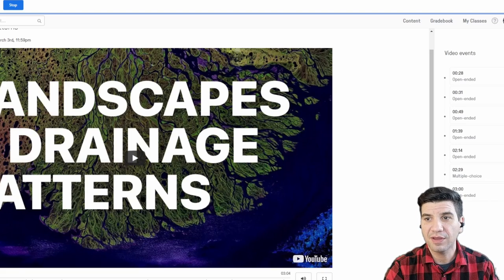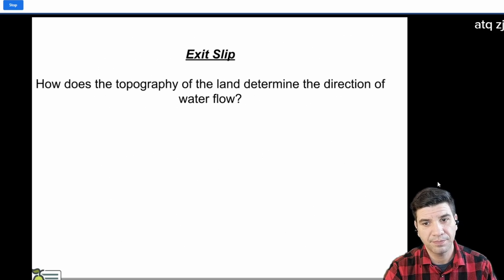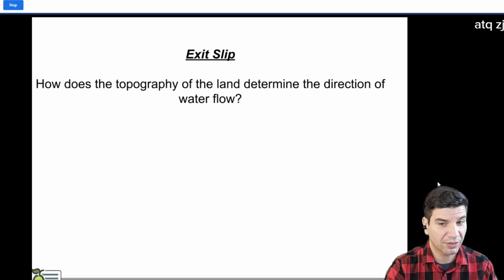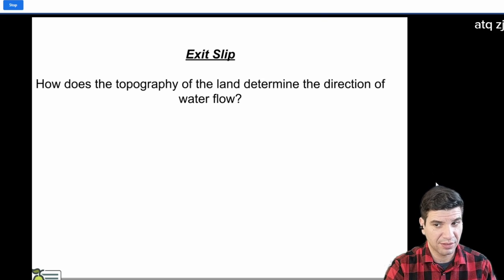All right. But before we leave, I do want you to try and answer our exit slip. How does the topography of the land determine the direction of water flow? How does the shape of the land determine the direction of water flow?